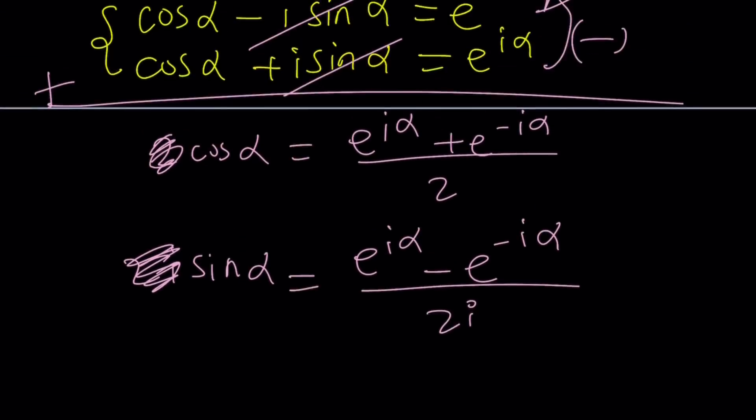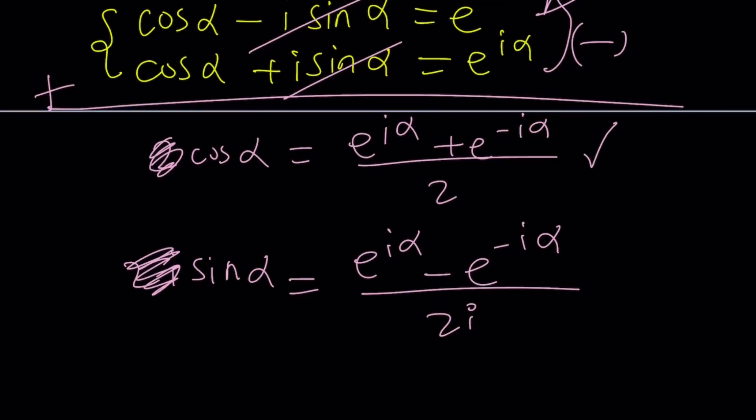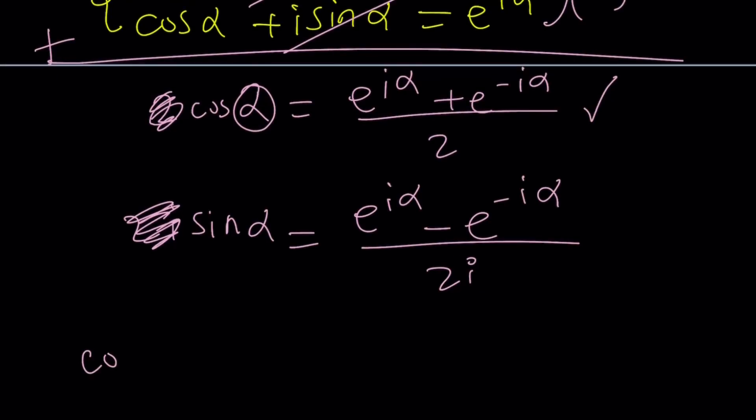Let's go ahead and do it. But what is cosine i from here? Easy. Replace alpha with i, and you're good to go. So cosine i is going to be e to the power ii, which is i squared, plus e to the power negative i squared, divide by 2. Let's go ahead and work it out.